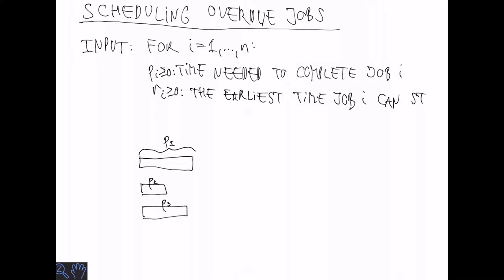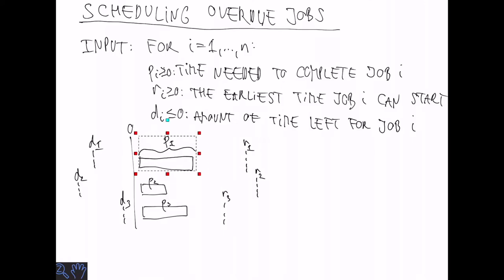Job i has a release time ri, which is the earliest time it can start. This is non-negative. And finally, di is the amount of time left for job i. Di is less than or equal to zero because all the jobs are overdue.